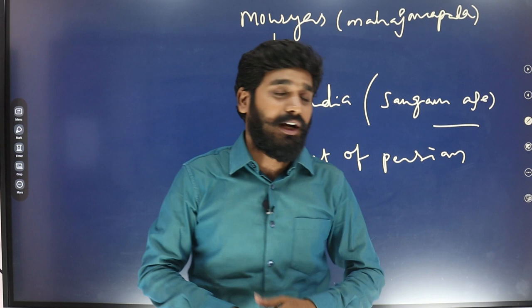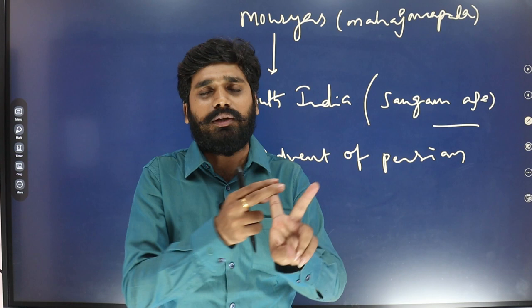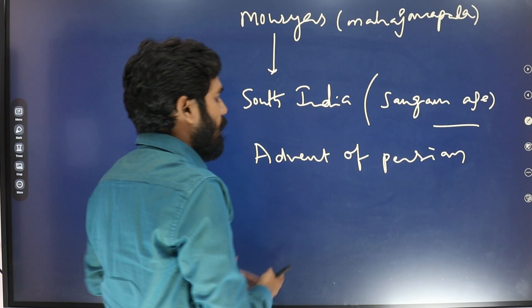During Kanishka's time period, two major sects existed in Buddhism — Hinayana, which says Gautama Buddha was human, and Mahayana, which says Gautama Buddha was God. This is also the context of foreign invasions in Indian history.